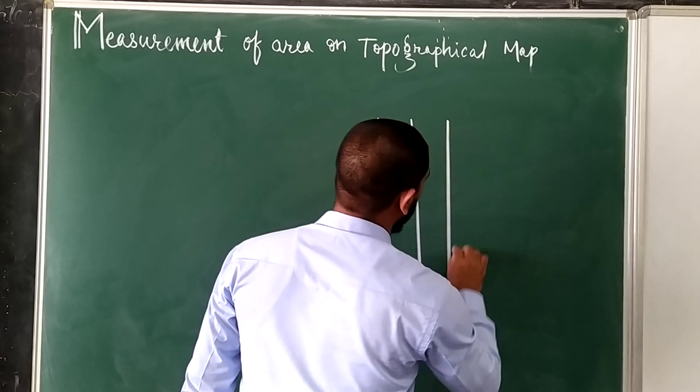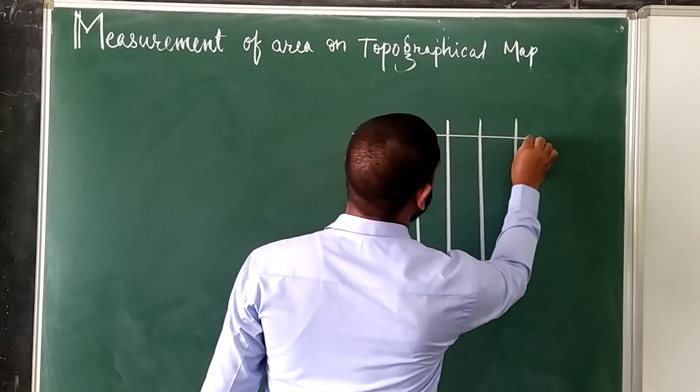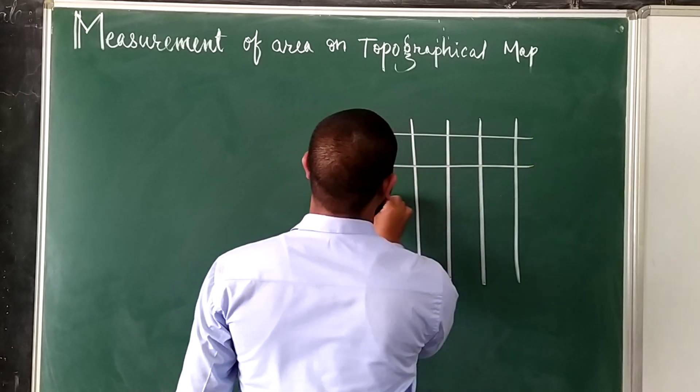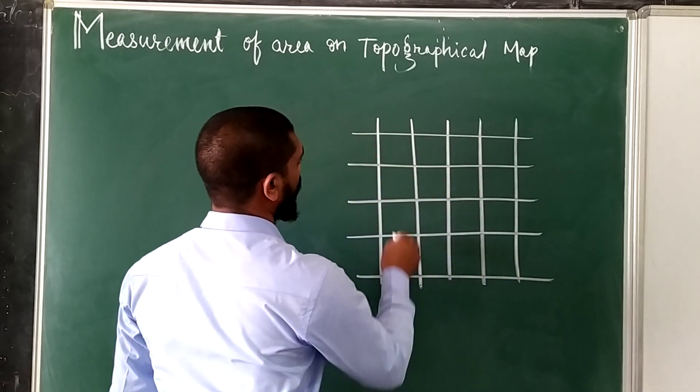These lines are Eastings and these lines are Northings.